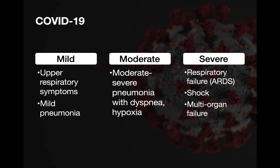From a clinical standpoint, it presents as a broad spectrum of diseases. We've likely seen coronaviruses in daily practice without knowing it, because it produced mild upper respiratory symptoms. About 81% of patients who get COVID-19 will be minimally symptomatic, with symptoms ranging from mild upper respiratory symptoms all the way through to mild pneumonia. About 14% of patients will be categorized as moderate, with moderate to severe pneumonia presenting with dyspnea and hypoxia.